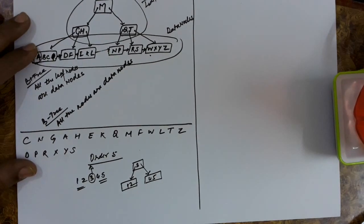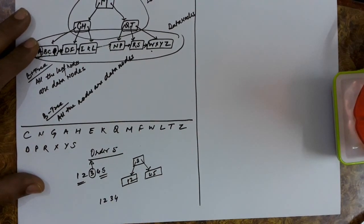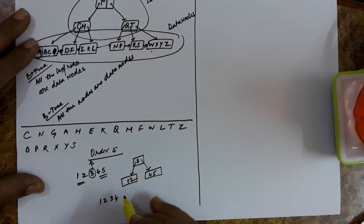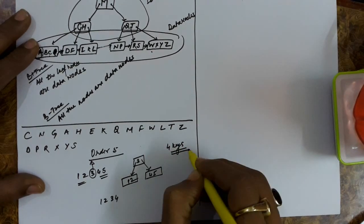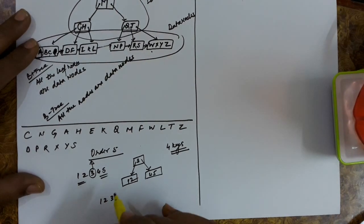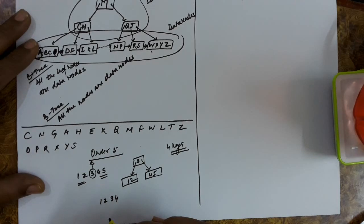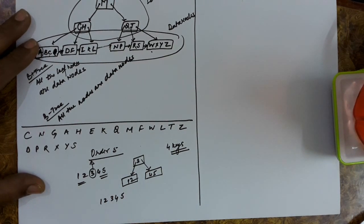In the case of the B+ tree, inserting keys 1, 2, 3, 4 is fine. Once you insert the 5th key, that is not possible because you cannot have more than 4 keys in a node. So you will have to perform the split. Now in the B+ tree, all the data nodes have to be retained on the leaf nodes.